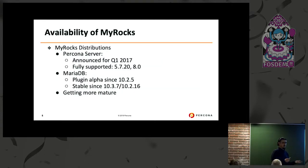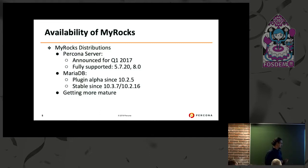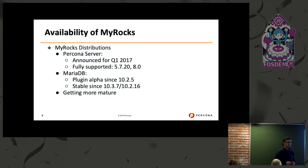So how do we get MyRocks? We get it via Percona Server or MariaDB. Percona Server introduced this in 2017 and it's fully supported in 5.7 and 8.0 releases. It's also been available in MariaDB from 10.2 and 10.3 distributions. They come built in — you don't need to do any extra download. If you download Percona Server 8.0, I think 18 is the latest version, it will come along with that.